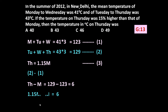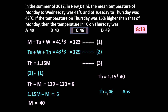Since Thursday's temperature is 1.15 times Monday's temperature, substituting gives 1.15M minus M equals 6, so 0.15M equals 6, giving Monday's temperature as 40 degree Celsius. Therefore Thursday's temperature is 1.15 into 40, which equals 46 degree Celsius. The answer is 46.